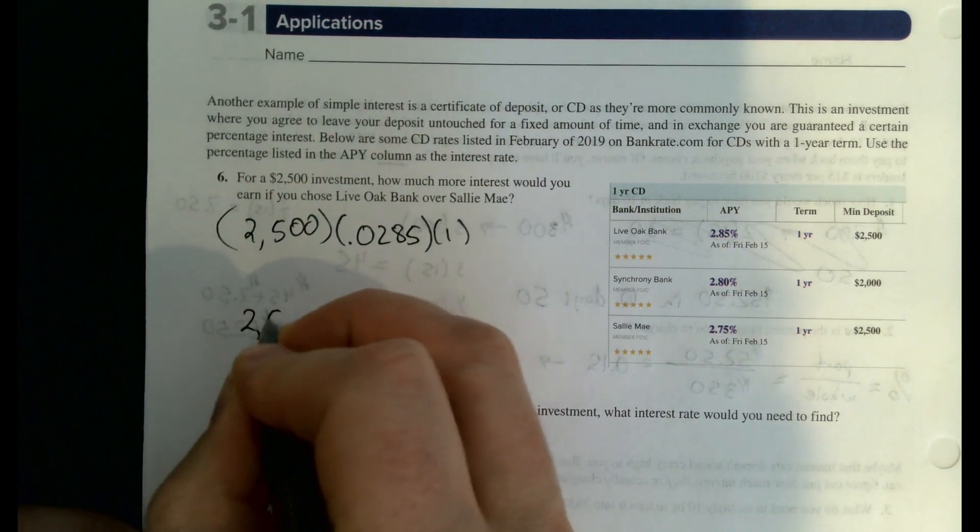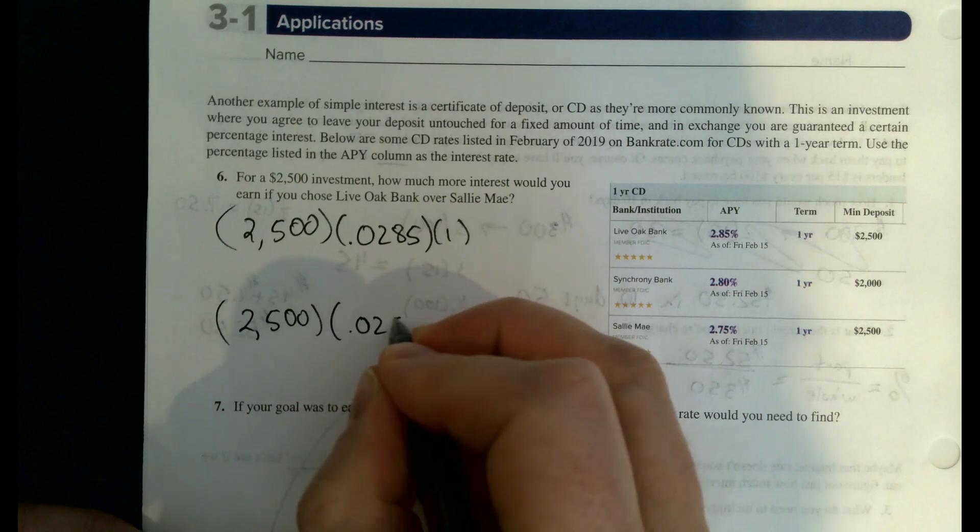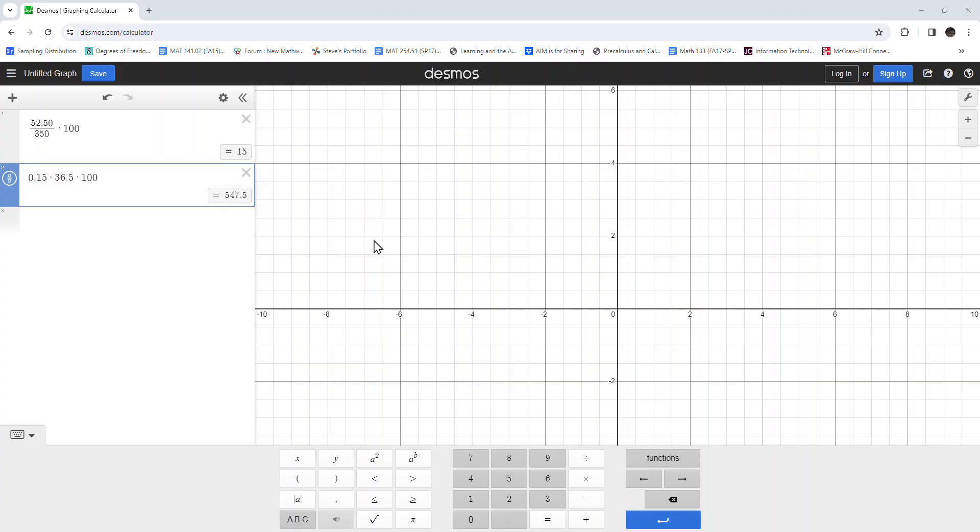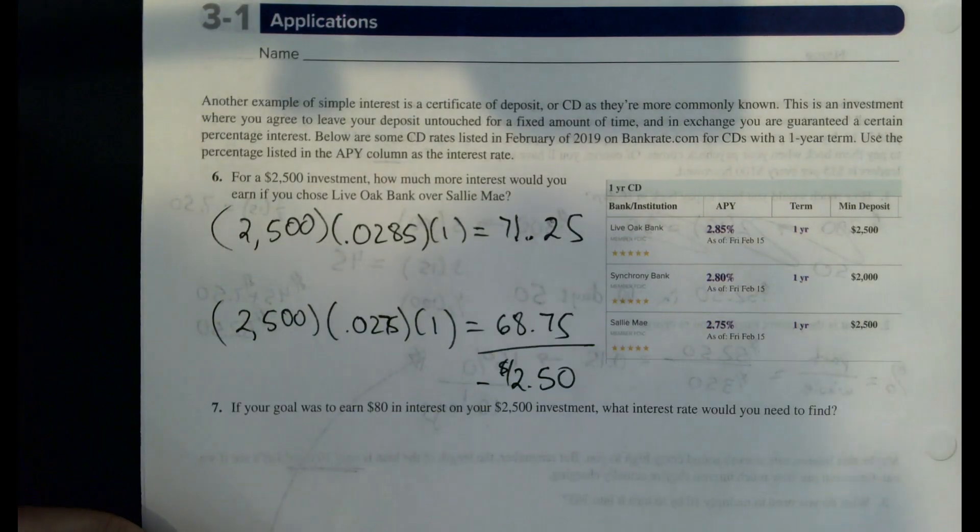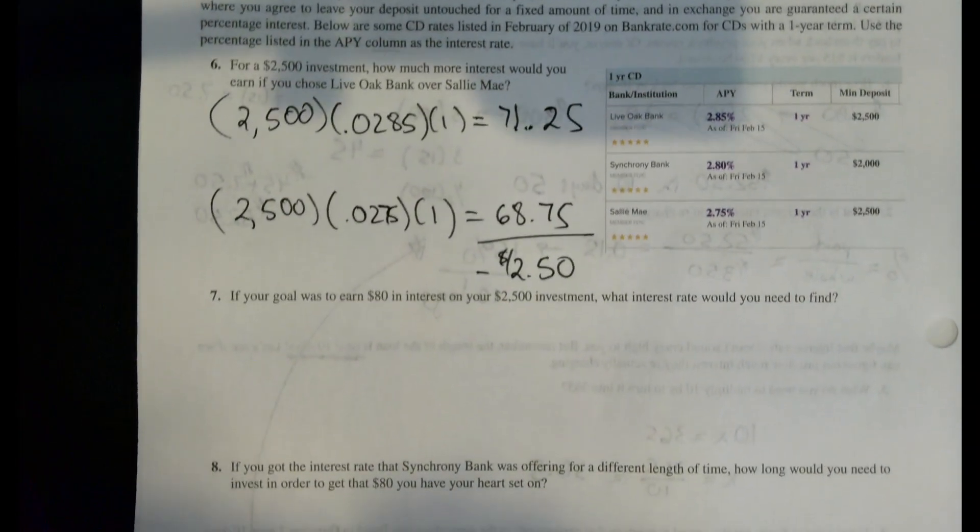We'll scamper over to Desmos. We can do both of those pretty quickly. We're getting $71.25 on that one. I wrote this one down wrong. And I also wrote this one down wrong. So there's our amounts. And then the difference between those two is the extra we earn by going to the Live Oak. So an extra $2.50. Not a big deal. Now, one of the keys with these is you do have to leave these in the bank for that amount of time.